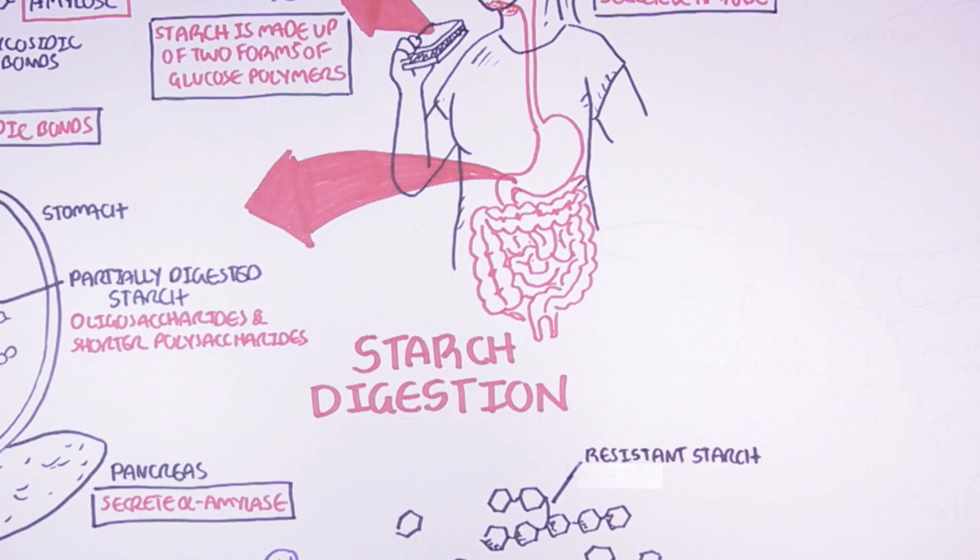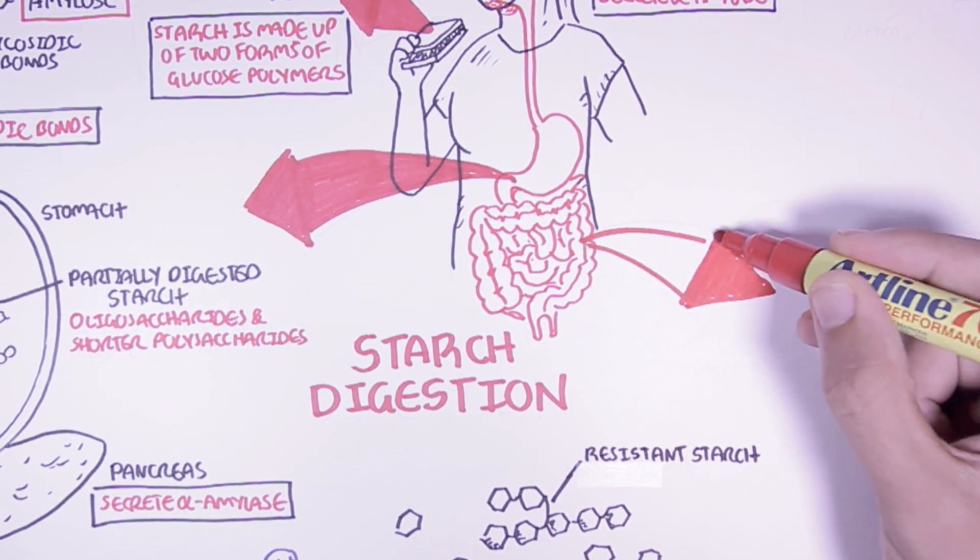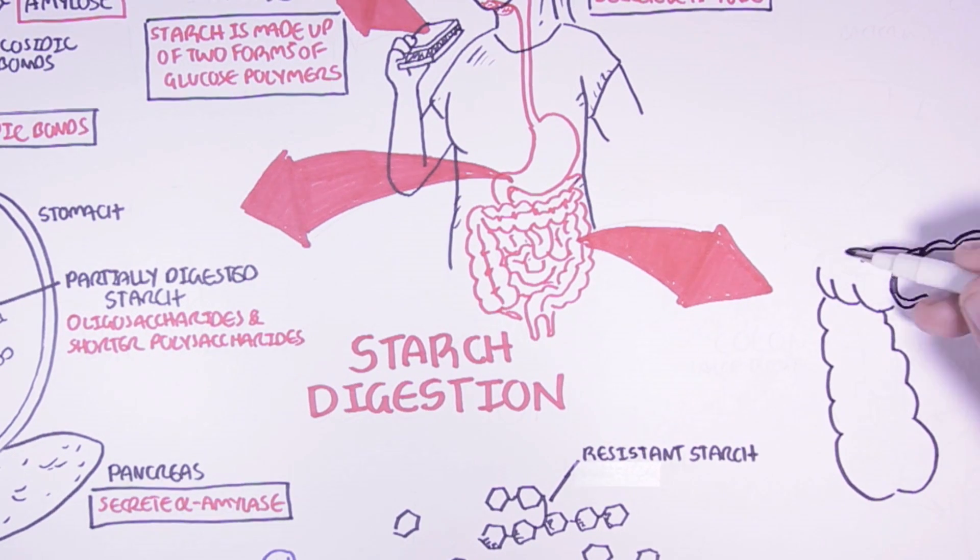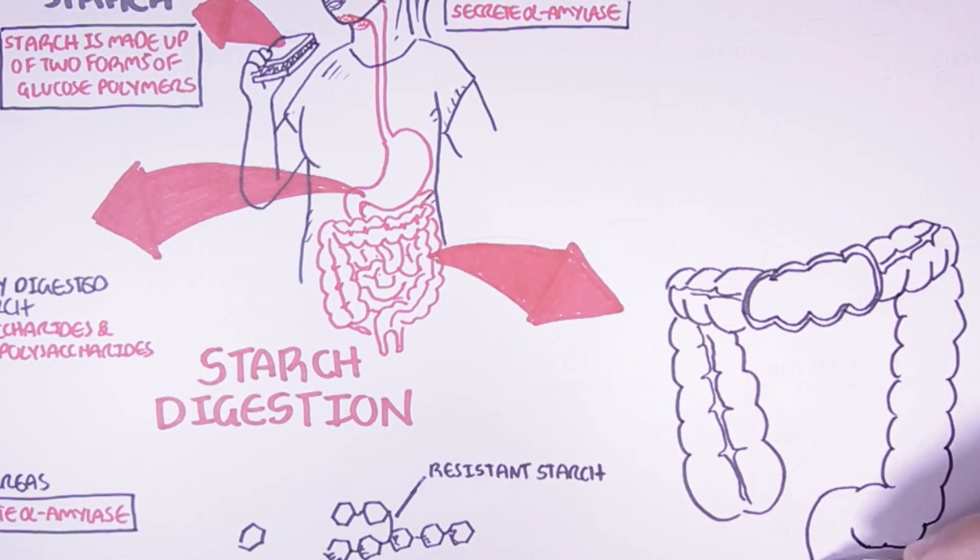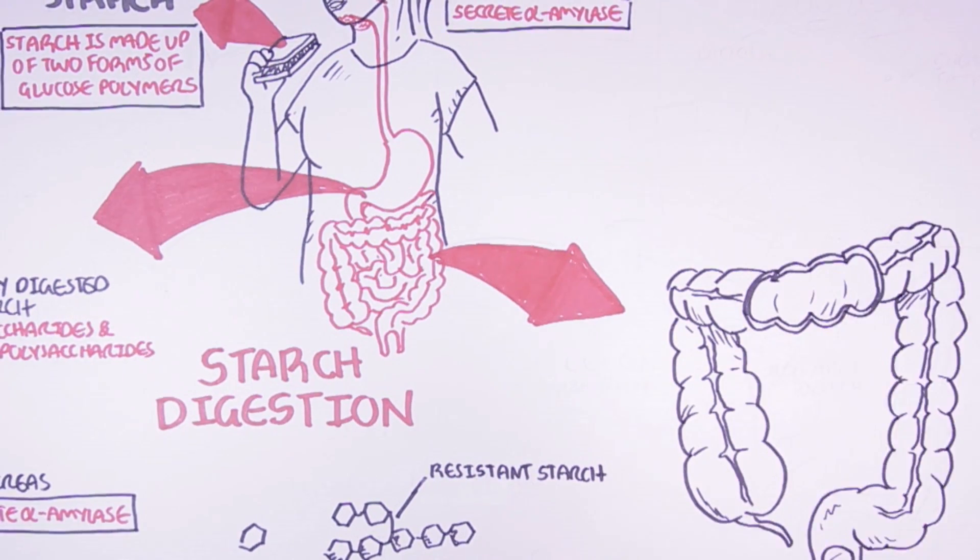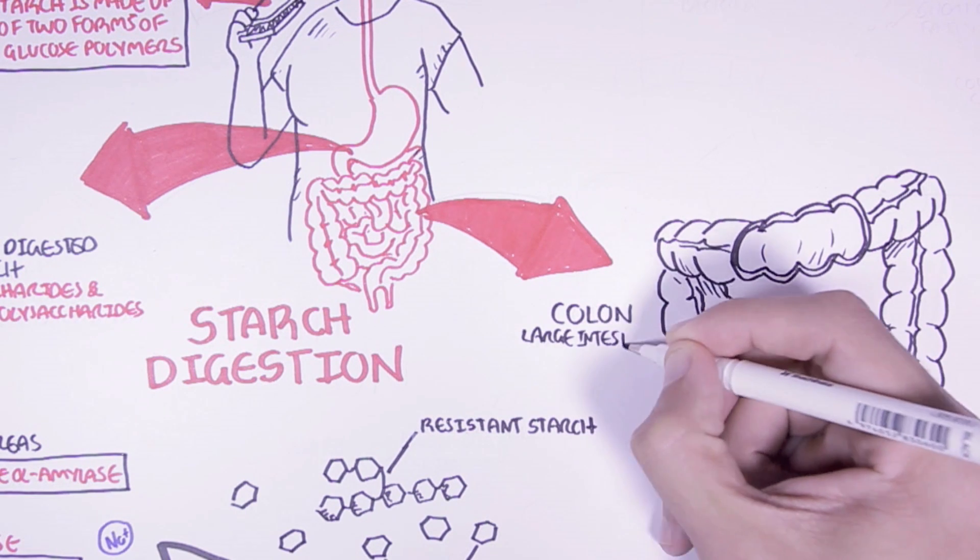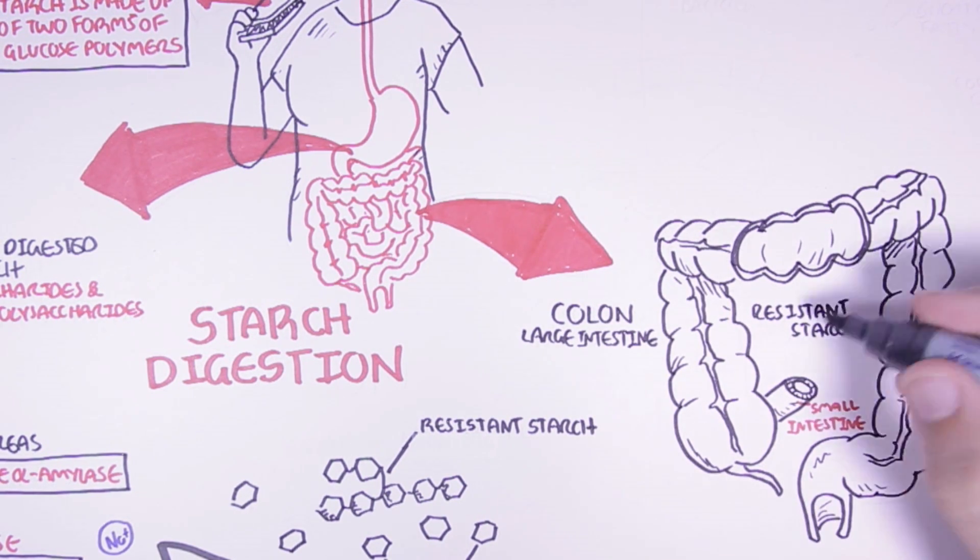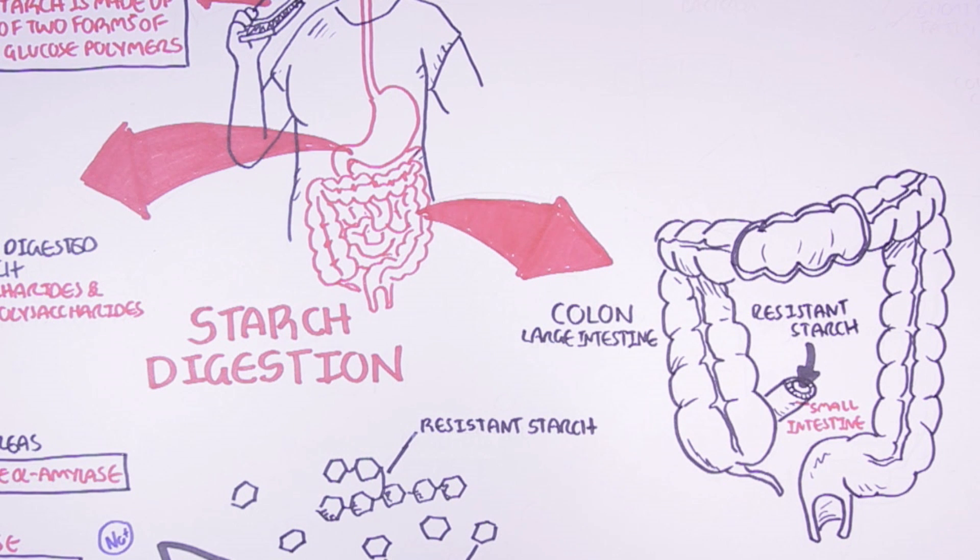So what happens to this resistant starch when it reaches the colon? So here we are just zooming into the colon. The colon is also known as the large intestine. The resistant starch will reach the colon after escaping digestion in the small intestine. Now within the colon, the resistant starch will actually undergo fermentation by the gut microbiota.